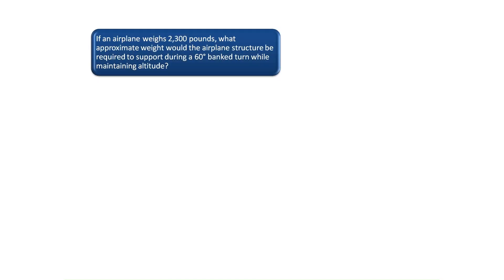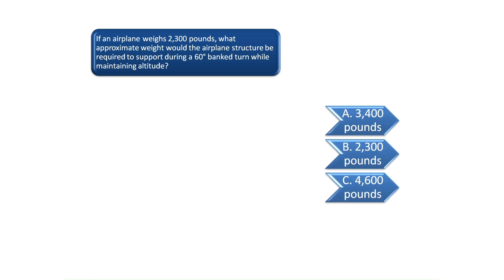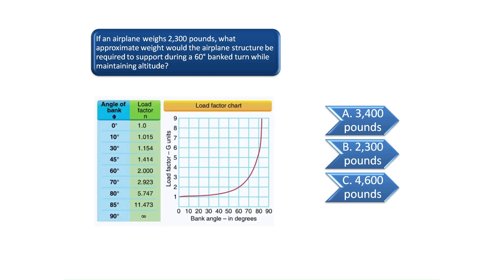Question 2 asks: If an airplane weighs 2,300 pounds, what approximate weight would the airplane structure be required to support during a 60 degree banked turn while maintaining altitude? The answer to this problem is fairly straightforward.